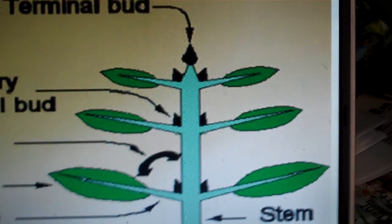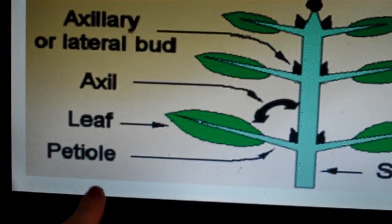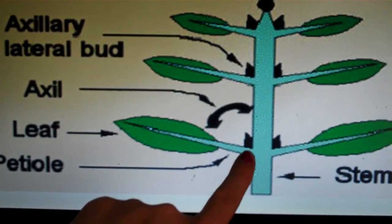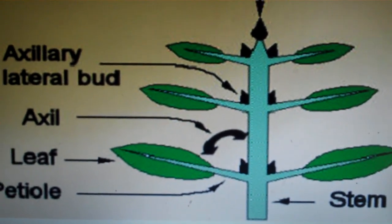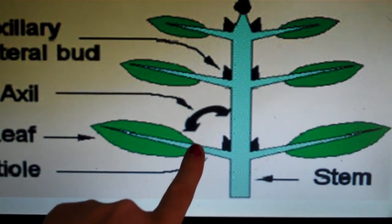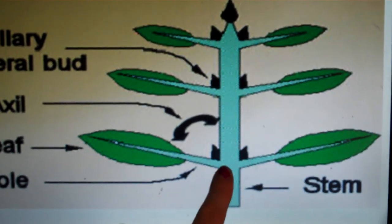We have petiole. A petiole is where the leaf branches off of the stem. Now the area where a petiole is connected to a stem is called a node.